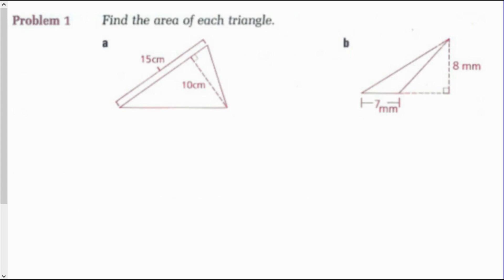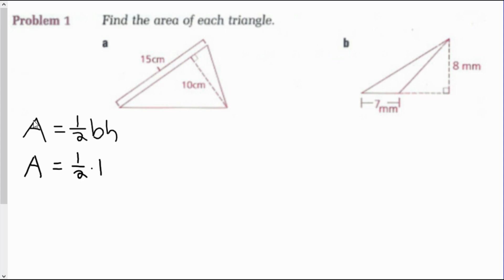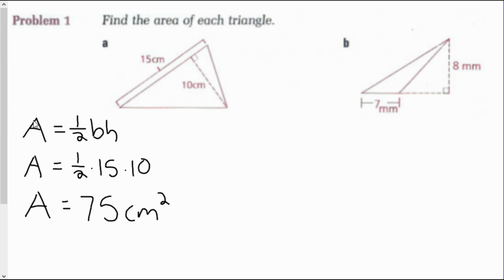Looking at some examples — Problem 1, find the area of each triangle. Example A: I have a height of 10 centimeters and a base of 15 centimeters. The area of a triangle is one-half base times height. So area equals one-half times 15 times 10. One-half times 15 times 10 is 75. So the area of this triangle is 75 centimeters squared.